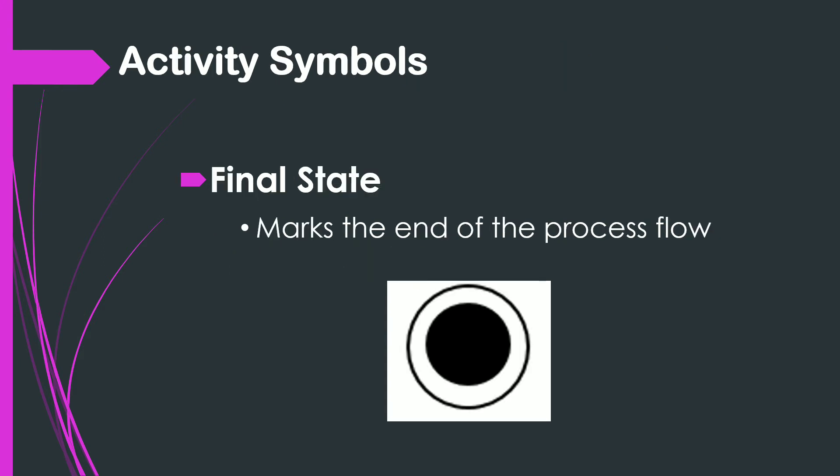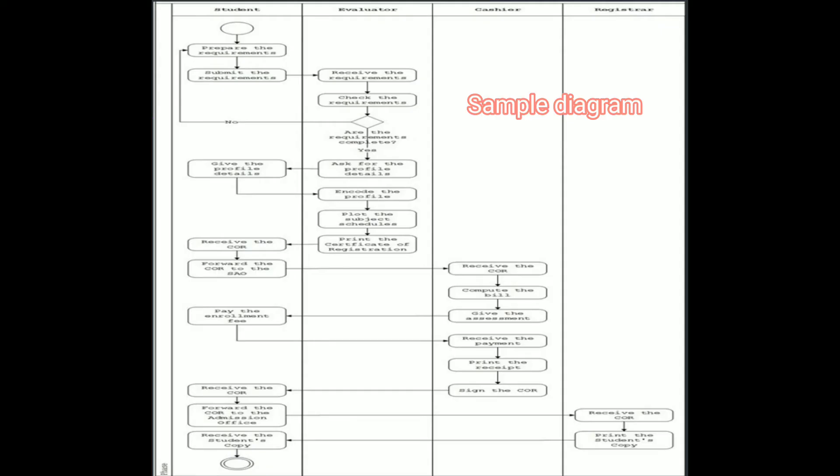And lastly, the final state symbol. This is where the activity ends. To be able to create an activity diagram, one must understand the flow of the proposed system or business process. Hence, it is essential to review the use cases you created.